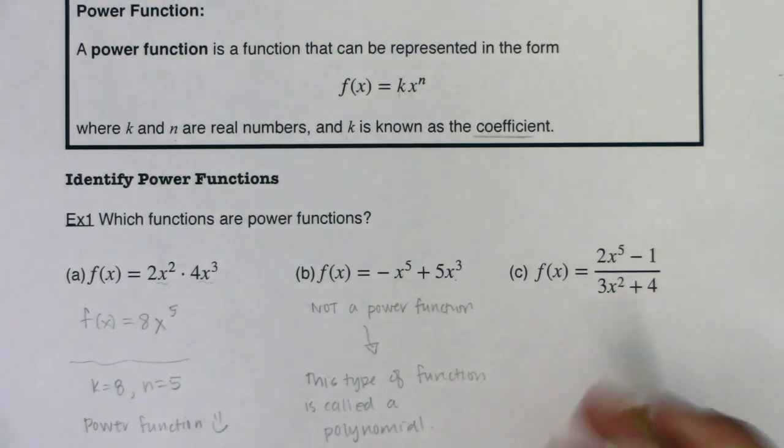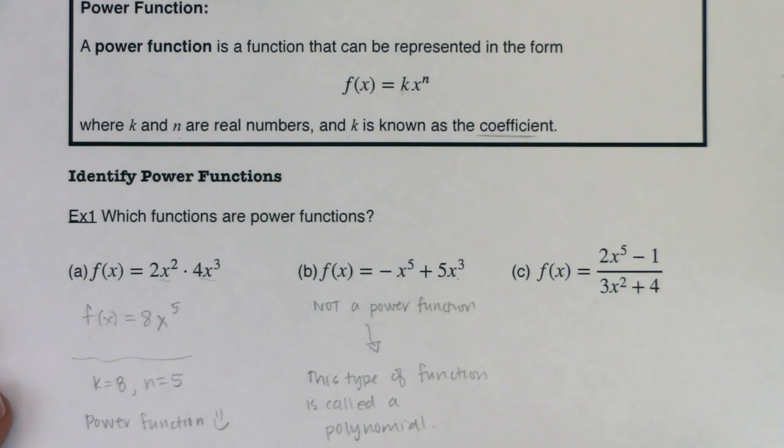I want to unpack this word polynomial. Poly means many, and nominal means term, right? So many terms, many nomials, if you will. That's what this is referring to - I have not just one power function but two power functions. So I have two terms, and that's why we'll call it a polynomial.